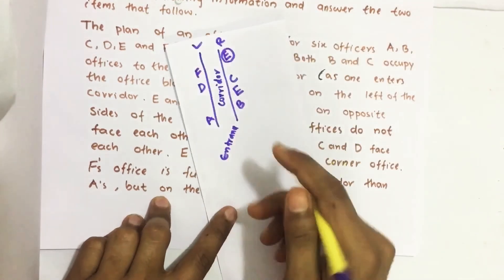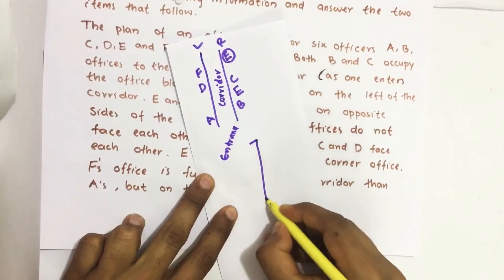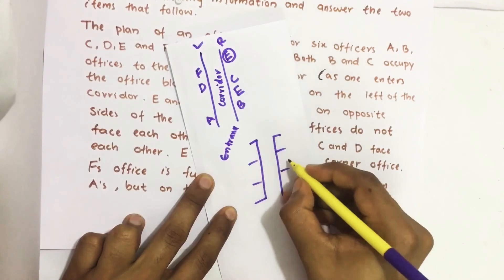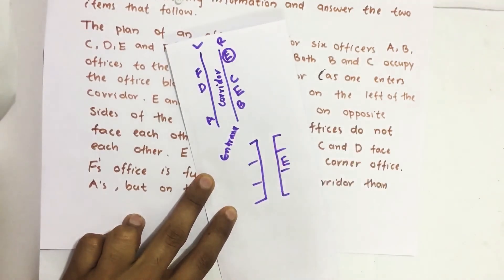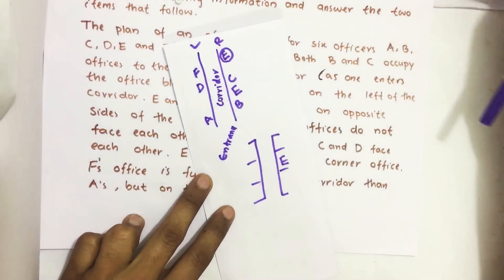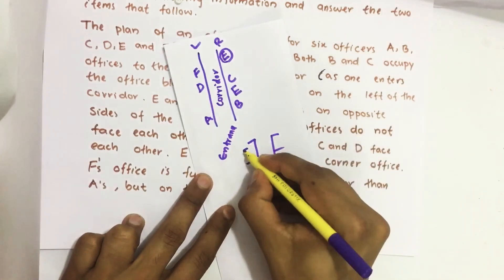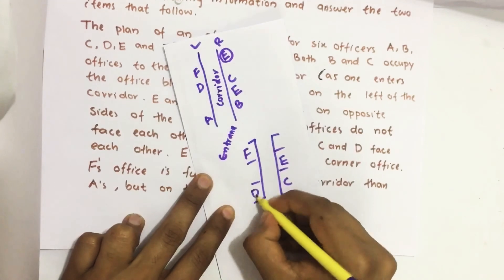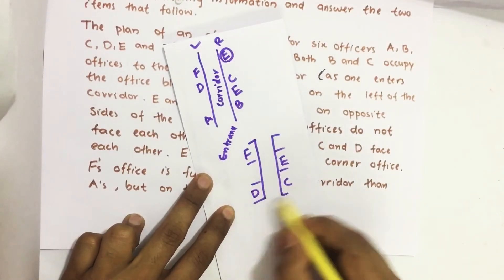Now let us redraw this. E should be at the center. And E should not be at this place. C and D should face each other.